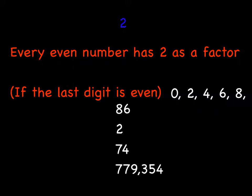So 86 is even because six is even. Two is even. Seven is odd, but 74 ends with an even digit. So 74 is even, it has a factor of two. 779,354, a very big number with five odd digits, ends in an even digit. So it is even and it has two as a factor.